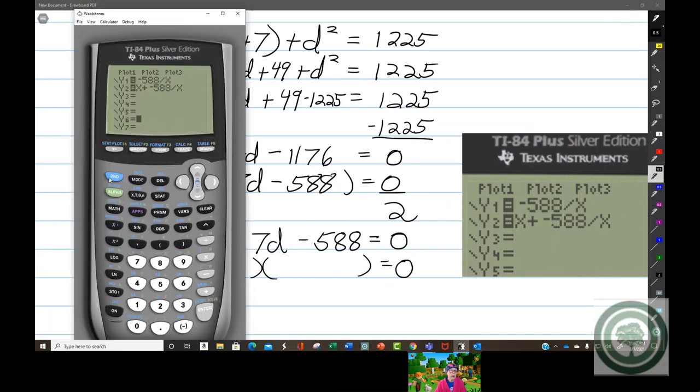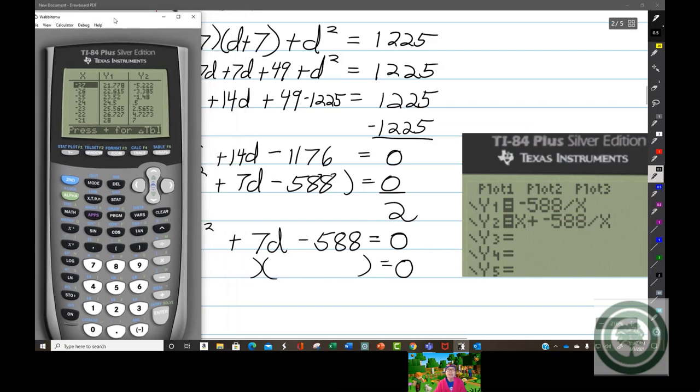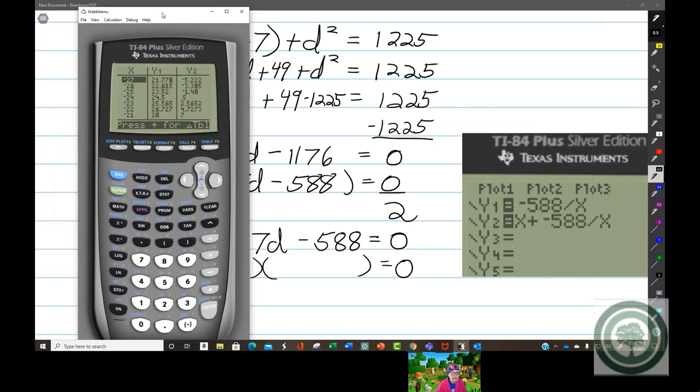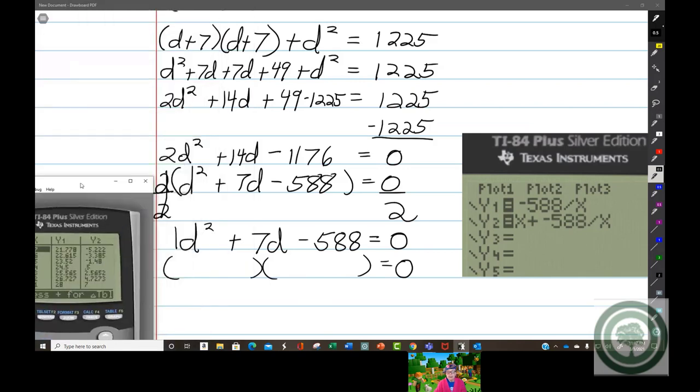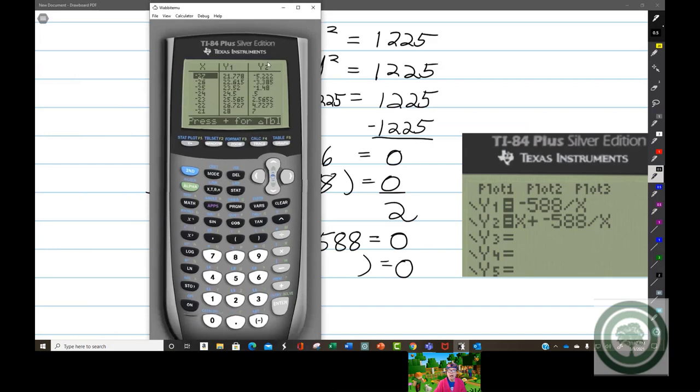Second graph, and there we are. I need a positive seven, and it's right there. Look at that, positive seven. We need two numbers that add up to positive seven. I look for positive seven in Y2, and there it is right there.